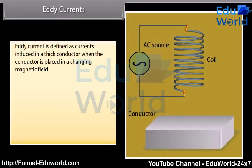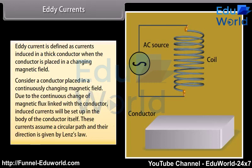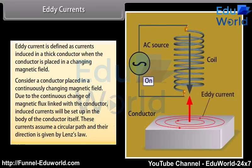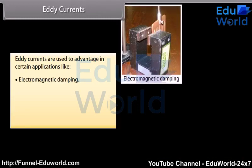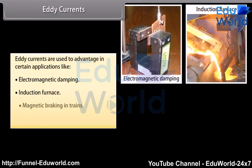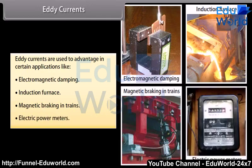Eddy currents are defined as currents induced in a thick conductor when the conductor is placed in a changing magnetic field. Due to the continuous change of magnetic flux linked with the conductor, induced currents are set up in the body of the conductor itself. These currents assume a circular path and their direction is given by Lenz's law. Eddy currents are used to advantage in certain applications like electromagnetic damping, induction furnace, magnetic braking in trains, and electric power meters.